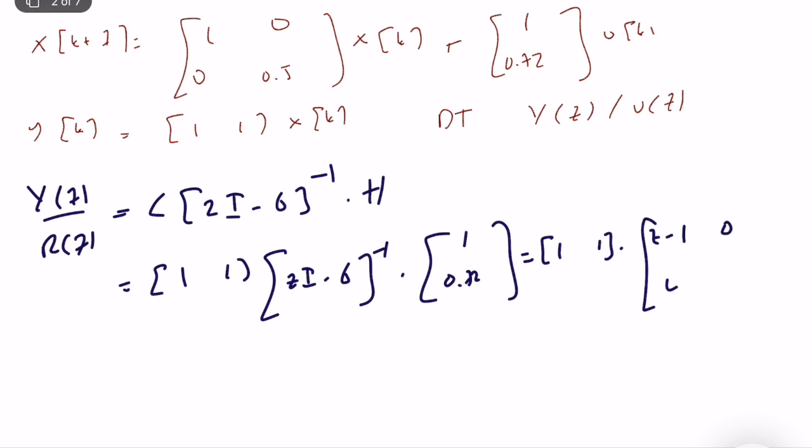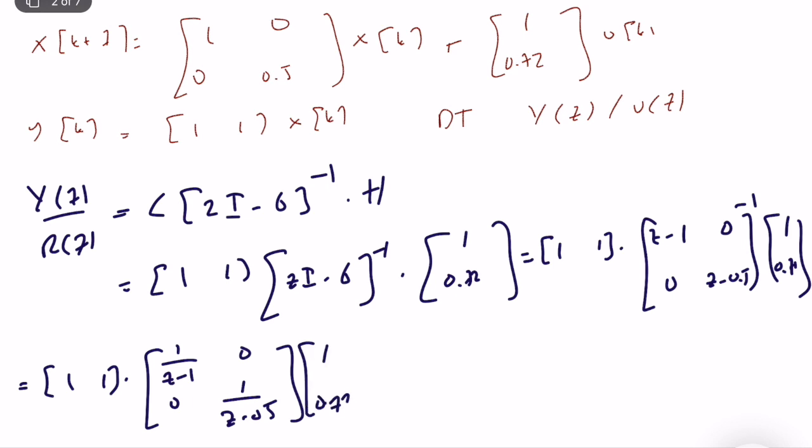So what is our zI minus G matrix? It's equal to z minus 1, this is 0, this is 0, this is z minus 0.5. We have 1, 0.72. That's great, and we have minus 1 here. So this is also diagonal, kind of diagonal, so taking the inverse is easy. It's equal to 1, 1, 1 over (z minus 1), this is 0, 0, 1 over (z minus 0.5), times 1, 0.72. That's great.